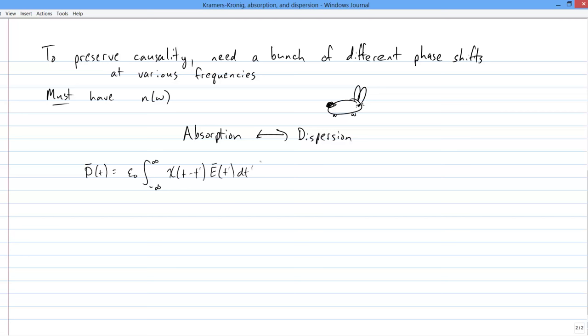In the frequency domain, this integral relationship becomes a simple multiplication. Now, chi is what eventually gets bundled up into the permittivity epsilon, and then the index of refraction n. And since to represent both dispersion and absorption, we write the index as having real and imaginary parts, it follows that the frequency domain representation of the susceptibility chi will also have real and imaginary parts.